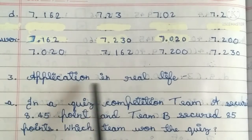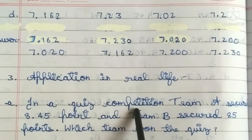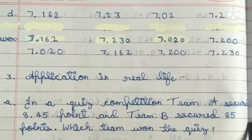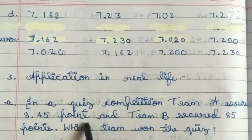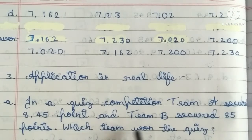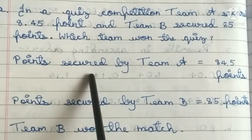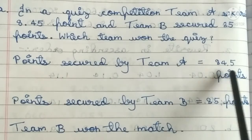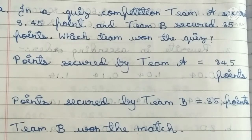Third part: Application in real life. First one: In a quiz competition, team A secured 84.5 points and team B secured 85 points. Which team won the quiz? Solution: points secured by team A is 84.5, team B is 85 points. Team B won the match.